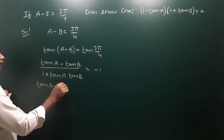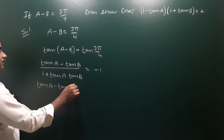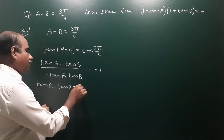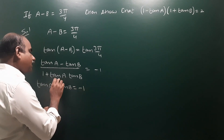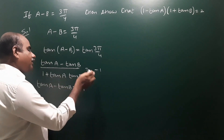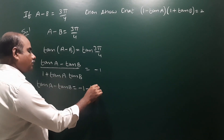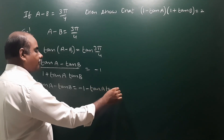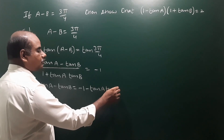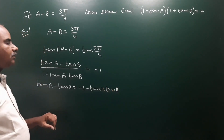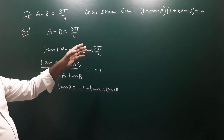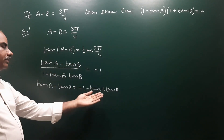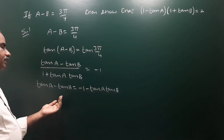tan(135°) equals minus 1. So tan A minus tan B equals minus 1 times (1 plus tan A tan B), which gives tan A minus tan B equals minus 1 minus tan A tan B. We need to show that (1 minus tan A)(1 plus tan B) equals 2.